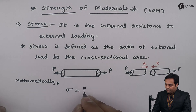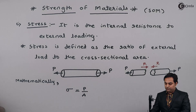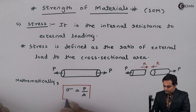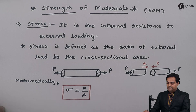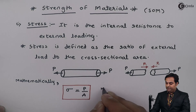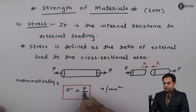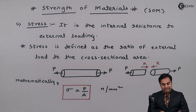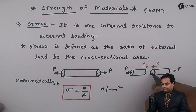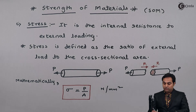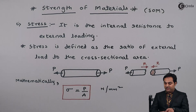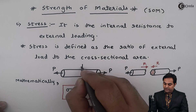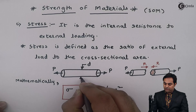Stress equals external load divided by cross-sectional area, written as σ = P/A. The unit of stress is Newton per mm square, since load is in terms of Newton and area is in terms of mm square. This area corresponds to the cross-section of the rod — assuming the rod is circular, the area would correspond to the diameter of the rod.